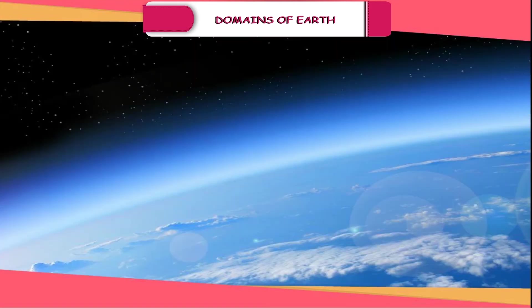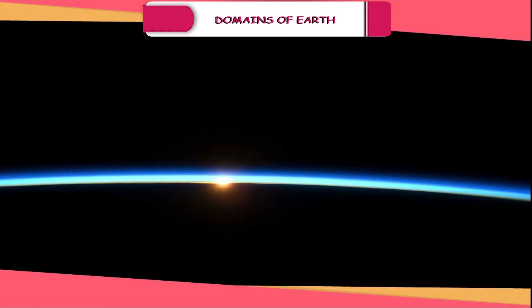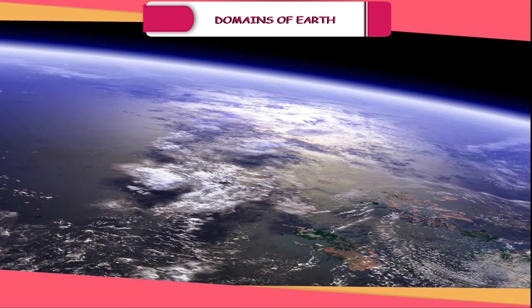The blanket of air surrounding the Earth is known as the atmosphere. It extends up to about 1600 kilometers from the Earth's surface. It is very dense near Earth's surface, and as we go up in the atmosphere, it becomes thinner and thinner.